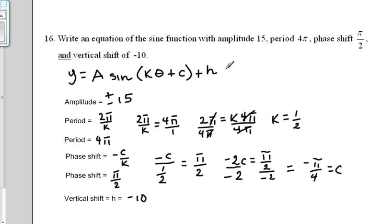Now we have all the values we need in order to write our equation. So let's write y equals plus or minus 15 sine parentheses k. So you can write this two ways. You can write 1 half theta or we could simply put theta over 2. Either of those two answers will be acceptable. C comes after that. We found that's negative π over 4. We close the parentheses and put the vertical shift outside that, minus 10, and we're done.